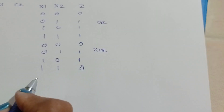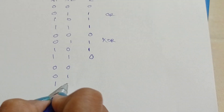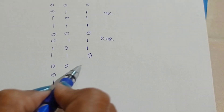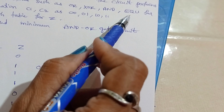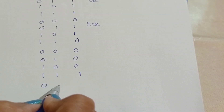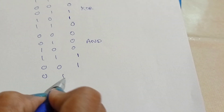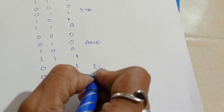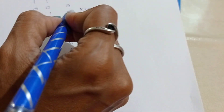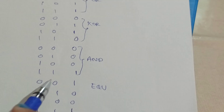Next is the AND operation. For an AND gate, both inputs must be 1 for the output to be high; in all other cases the output is 0. Next is the EQUAL operation — if both inputs are equal the output is 1; otherwise the output is 0. These are the given logic functions: OR, XOR, AND, and EQUAL.